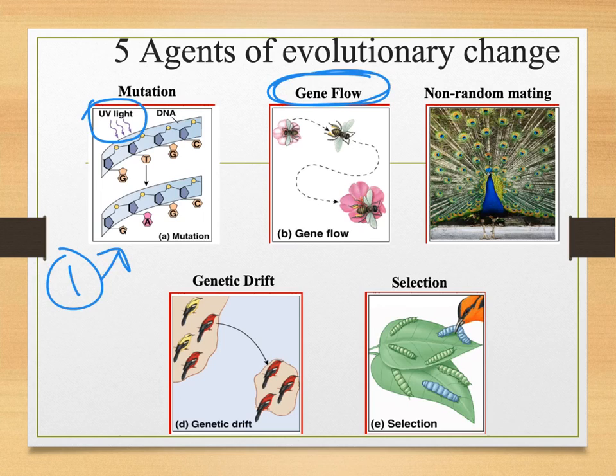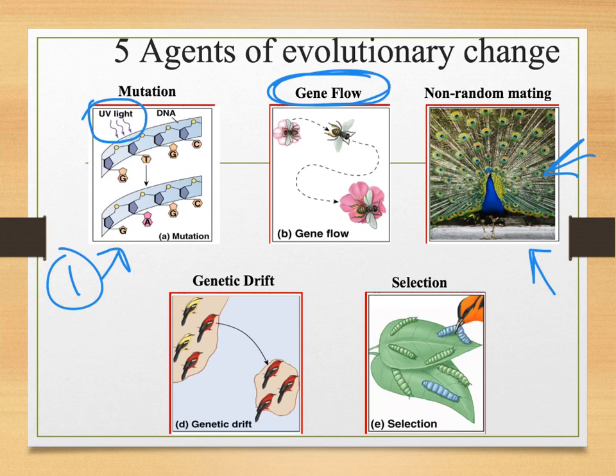Non-random mating is another agent. For example, we have the peacock — peacocks are kind of like teenage boys showing off. They're deliberately trying to get a mate. These ridiculous feathers are trying to attract a mate. When boys do flips on a skateboard, they're trying to get a mate. This kind of showing-off behavior is non-random — they want you to select them, saying 'pick me.'